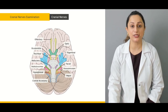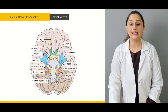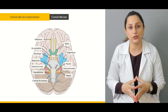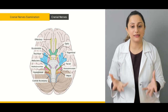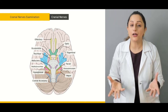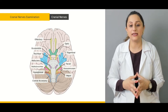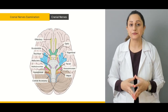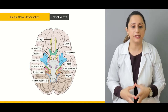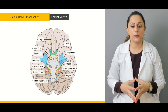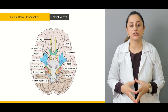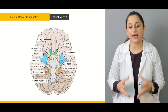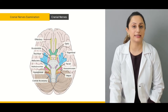Starting off, we are going to discuss the naming of these cranial nerves. Roman numerology is used for naming these cranial nerves, and apart from that they have their own names: the olfactory, optic, oculomotor, trochlear, and trigeminal. Then we have the abducens, facial, vestibulocochlear, hypoglossal, glossopharyngeal, vagus, and the cranial accessory nerves.